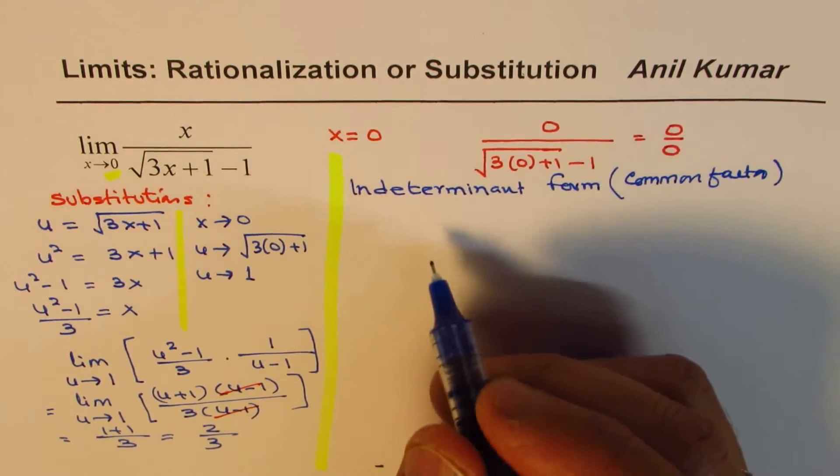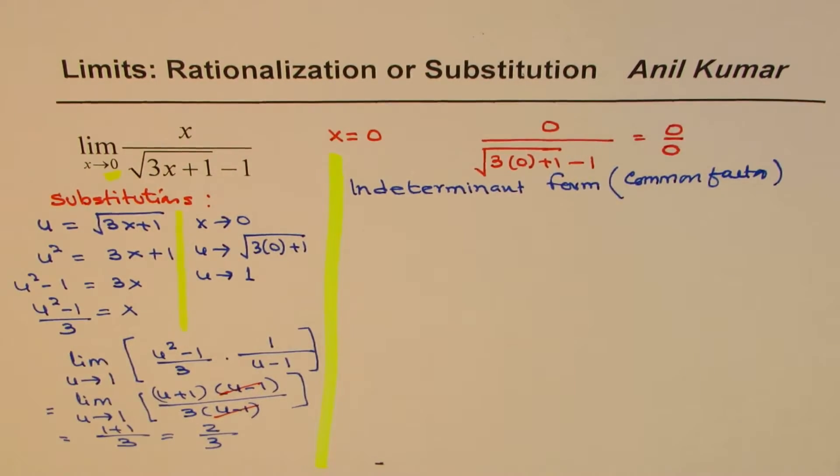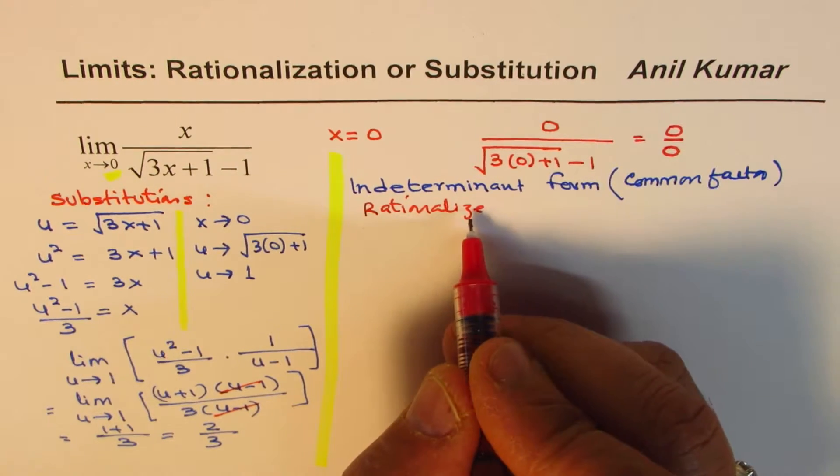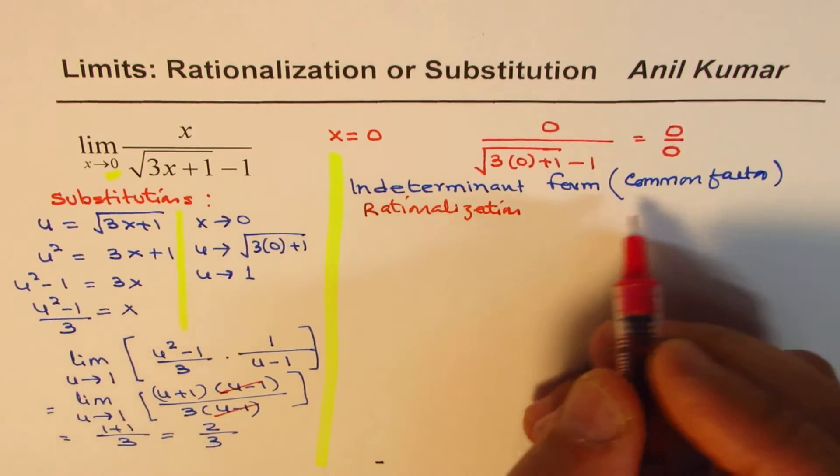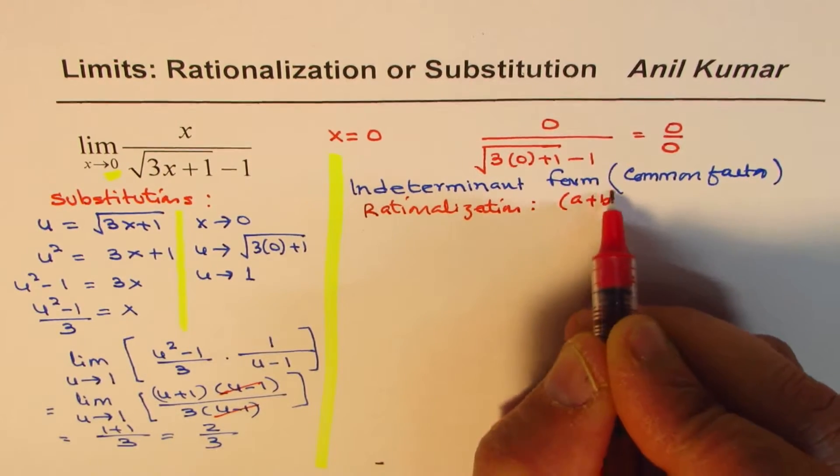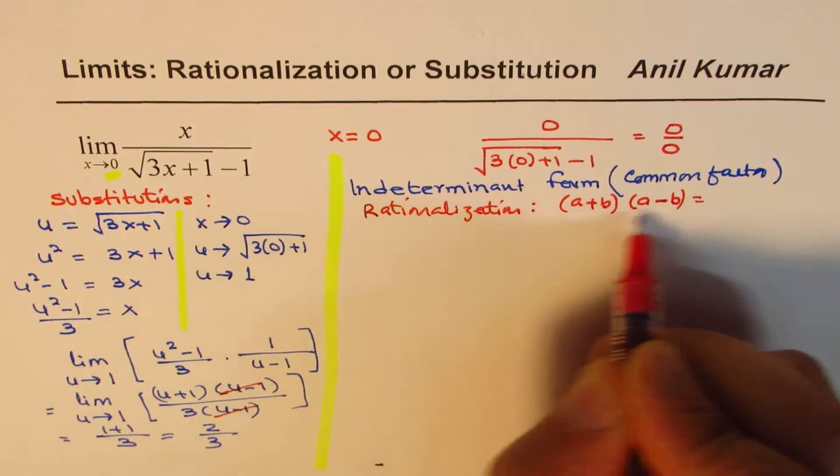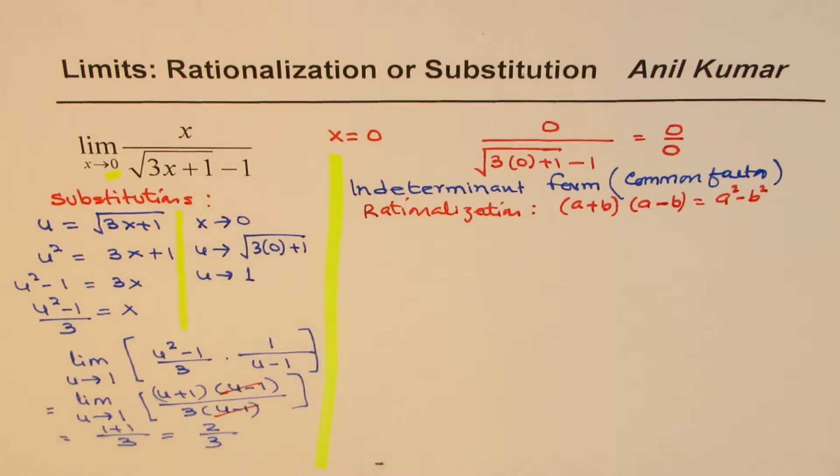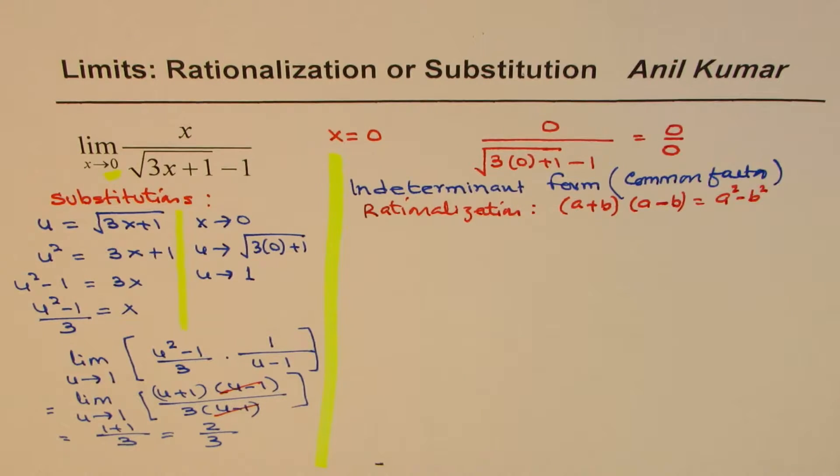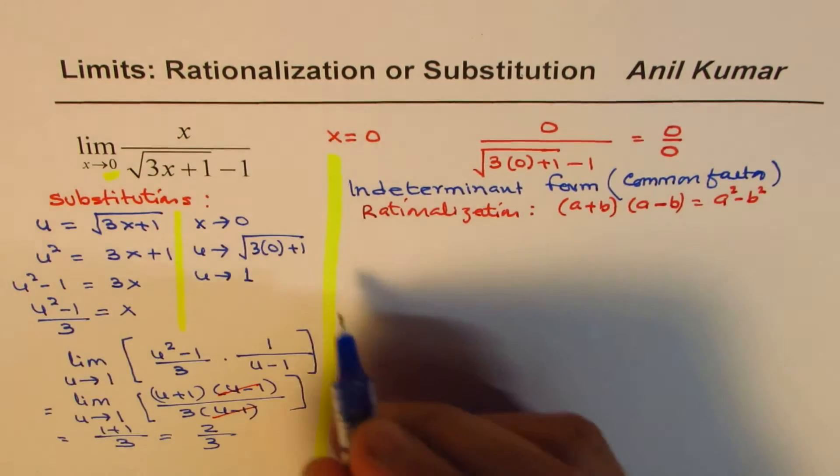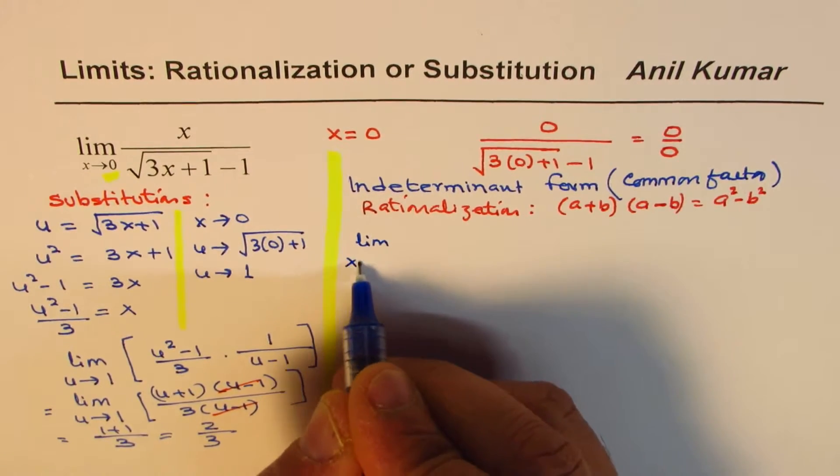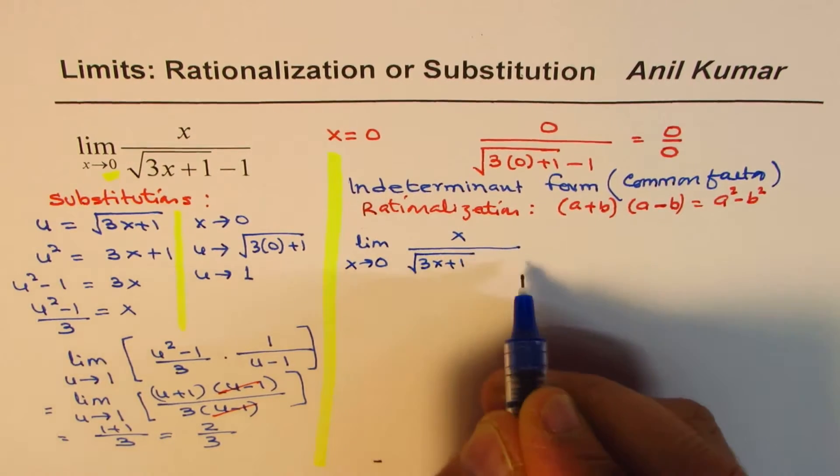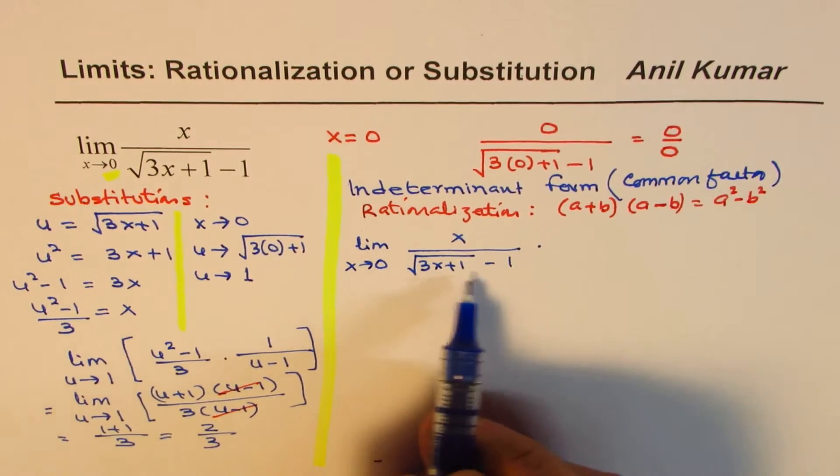Now let's do the standard method which is rationalization. In rationalization we multiply and divide by the conjugate. Conjugate means if I have a plus b then conjugate is a minus b. When you multiply you get a squared minus b squared. So that means square of square root is square root gone and that helps to simplify the expression.